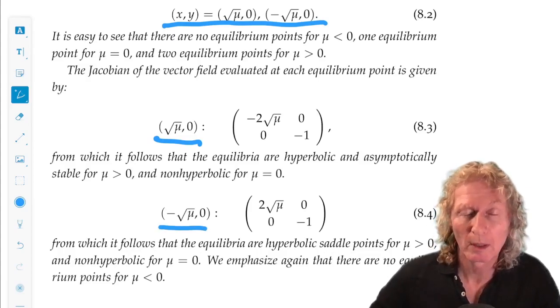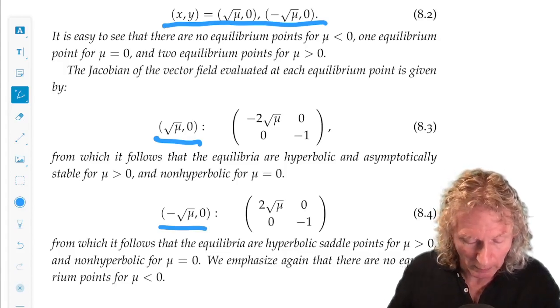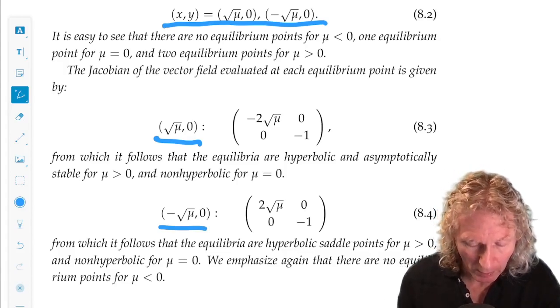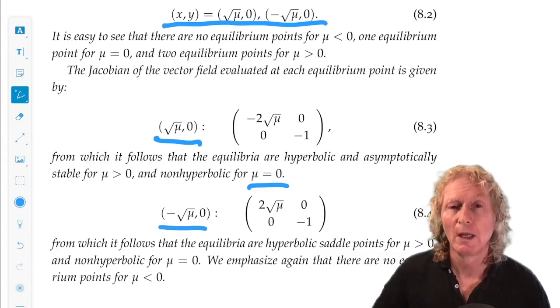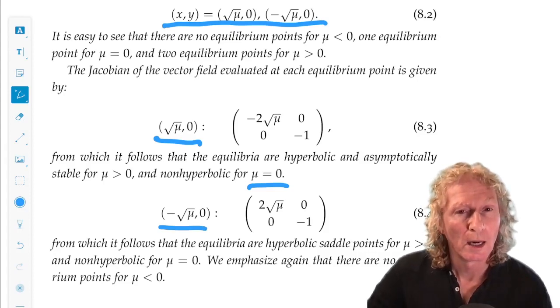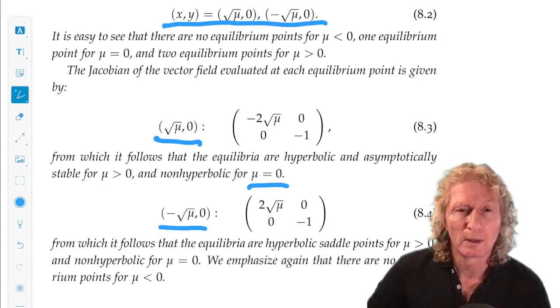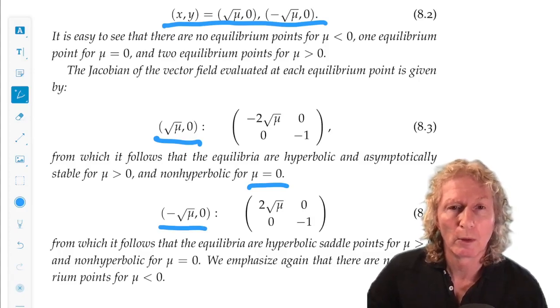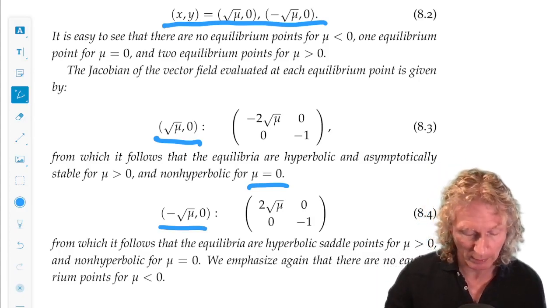At mu equals zero, they coalesce into a non-hyperbolic point. You can see the eigenvalues at mu equals zero are zero and minus one, so you have a single zero eigenvalue.